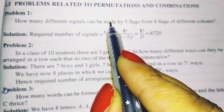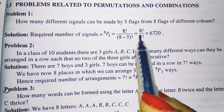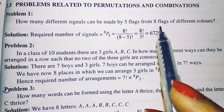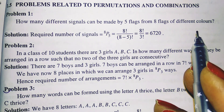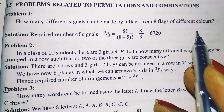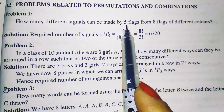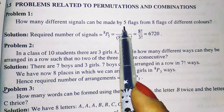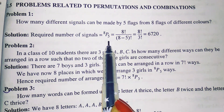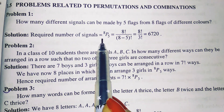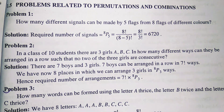The first problem is: how many different signals can be made by five flags from eight flags of different colors? There are total eight different flags of different colors; among them we want to make a signal of five flags. It is very obvious it can be 8P5, so this is the arrangement.